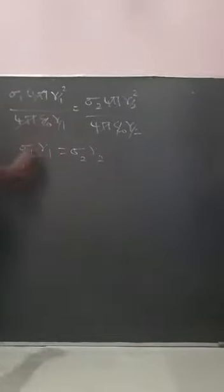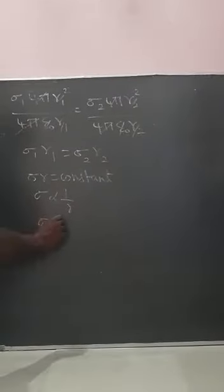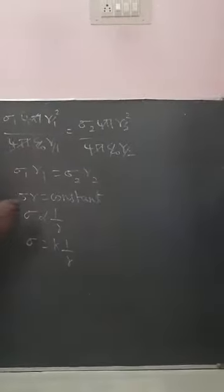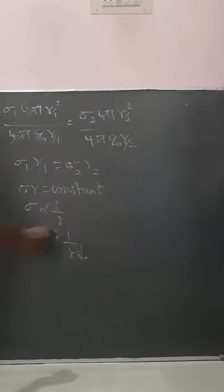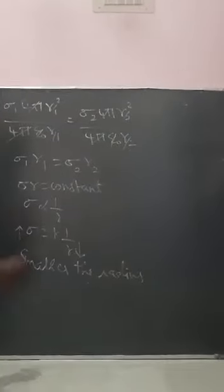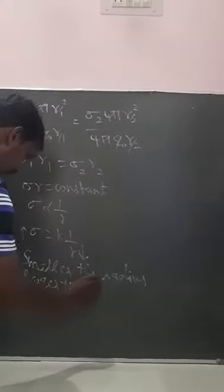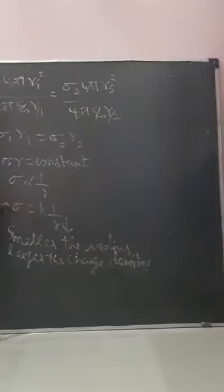According to equal potentials, sigma times r is equal to a constant. When sigma r equals a constant, we can write sigma is proportional to 1 over r, or sigma equals k over r where k is a constant. This means smaller the radius, larger the charge density.